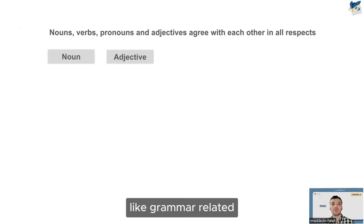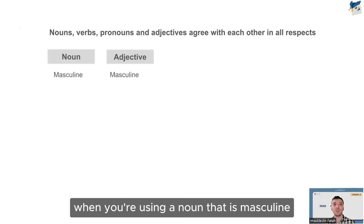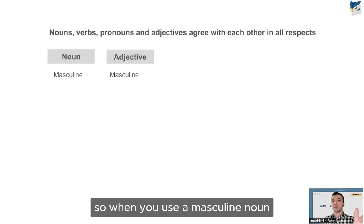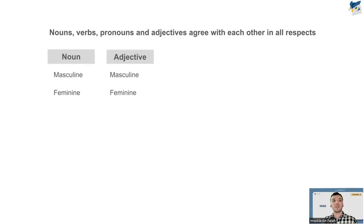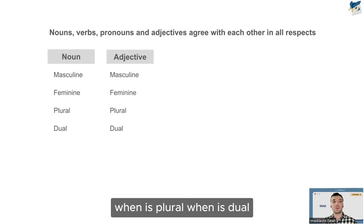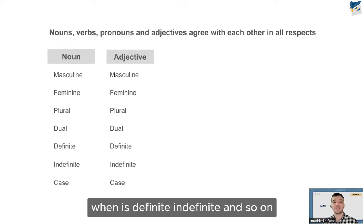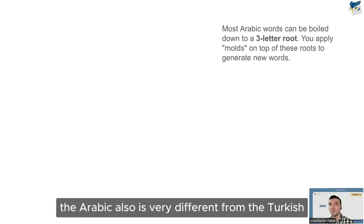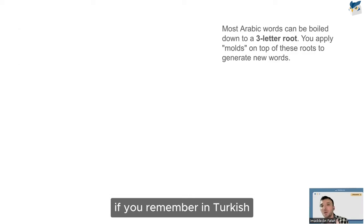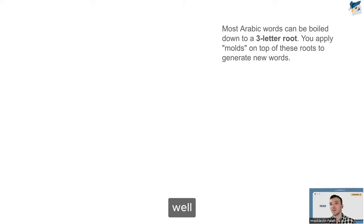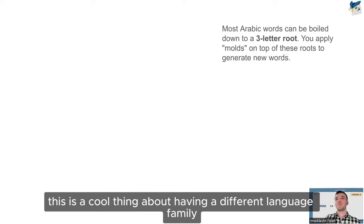Another grammar point: in Arabic, every noun is either masculine or feminine. When you use a masculine noun, the adjective must also be masculine; a feminine noun requires a feminine adjective. And the agreement extends to plural, dual, definite, and indefinite forms — the whole sentence must agree. Arabic is very different from Turkish in this way: if you remember, in Turkish you glue suffixes together. Arabic instead is built around a trilateral root system.